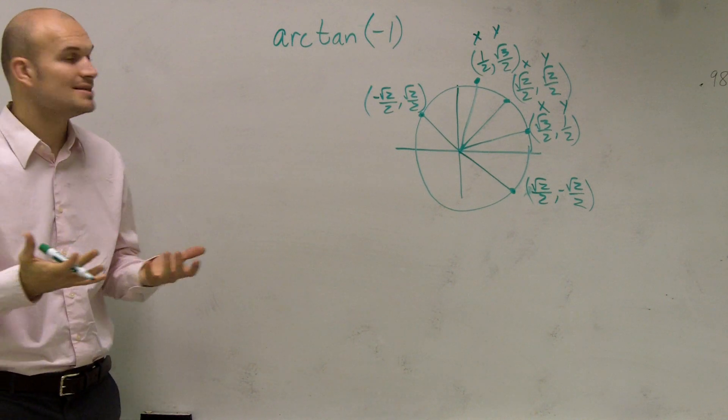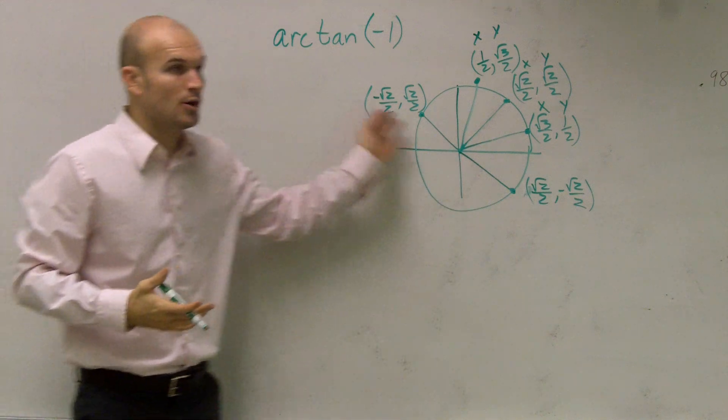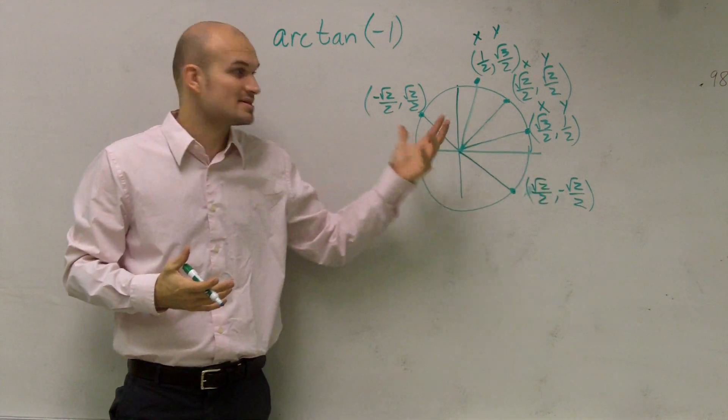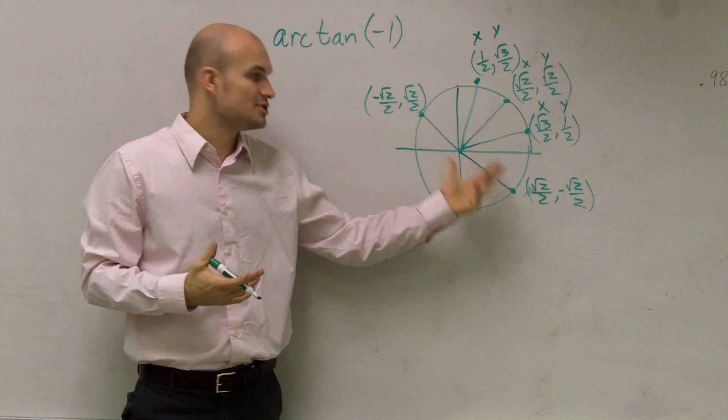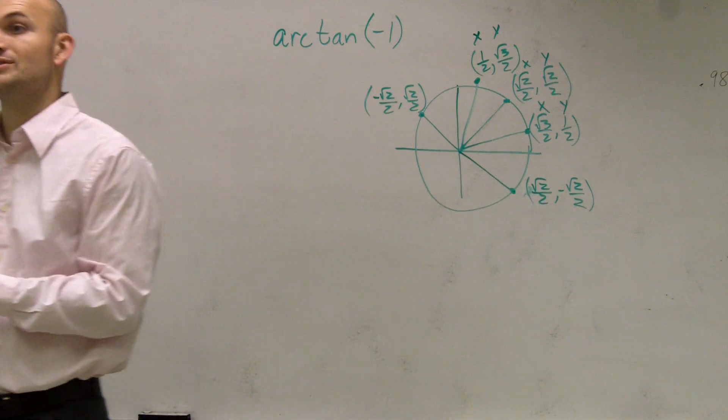Okay. Then, so we have the choices between these two points. Both these points, my tangent represents a negative 1. So what I want to do is I want to find what is going to be my inverse tangent. Hold on for a second.